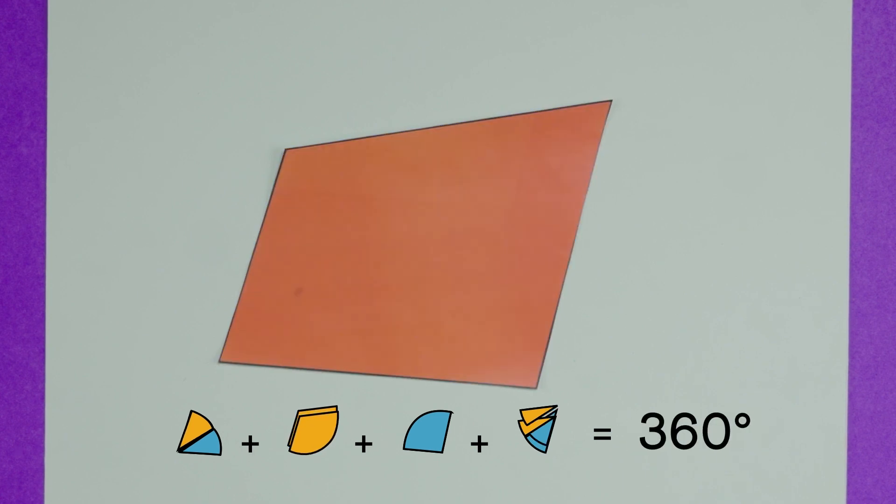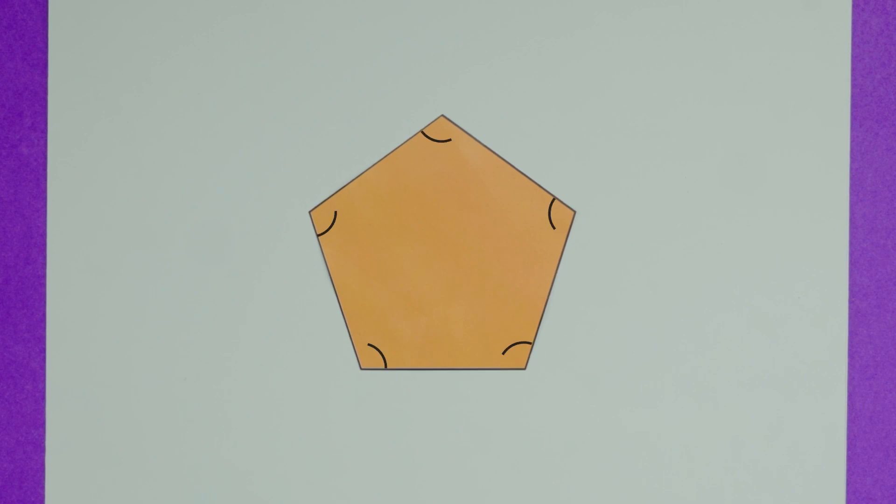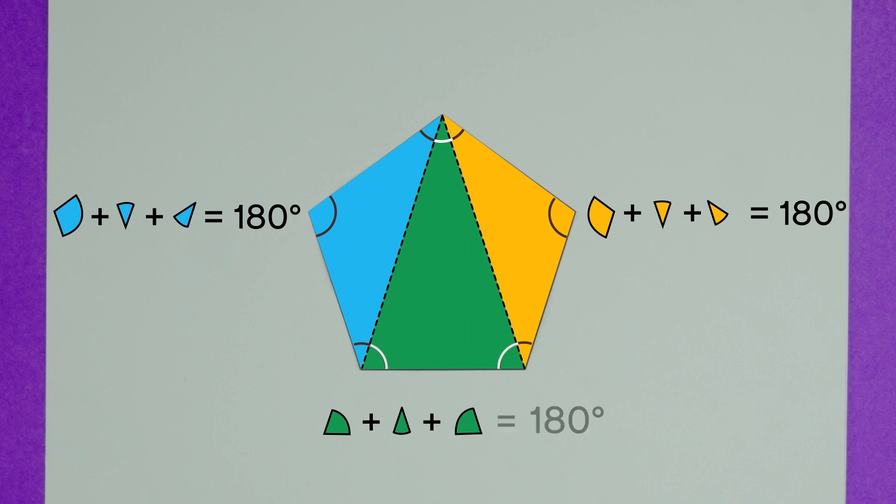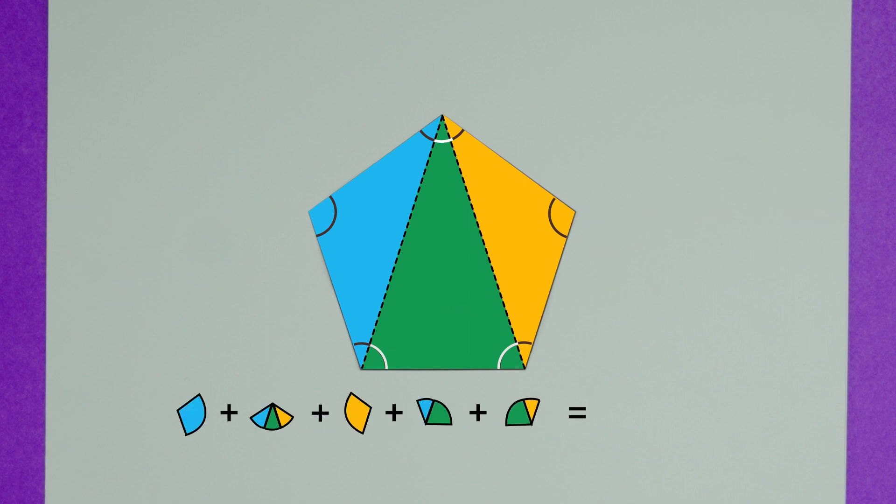Here's another polygon: a pentagon with its five angles. By joining one vertex to the others, we get three triangles. Again, some angles are divided into smaller angles, but what's their sum? In each triangle, the angles add up to 180 degrees, so the sum of all these angles must be three times 180, which is 540 degrees.